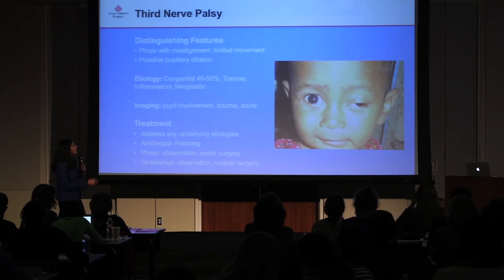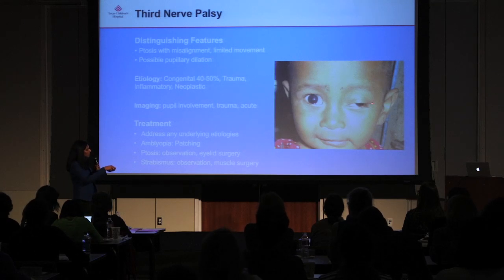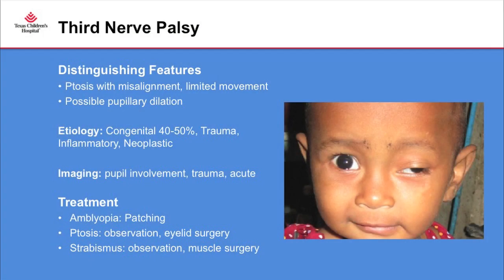This child has a third nerve palsy. You can see that the eye is exotropic, but the clue that it's not a simple exotropia is that there's ptosis. What distinguishes it from congenital ptosis is that there is an exotropia as well. In addition to ptosis with misalignment, there will also be limited extraocular movement — the patient may not be able to adduct, elevate, or depress the eye. Third nerve palsy can also be associated with pupillary dilation. Forty to fifty percent of infantile third nerve palsies are congenital; they can also be associated with trauma, inflammation, and neoplasia.